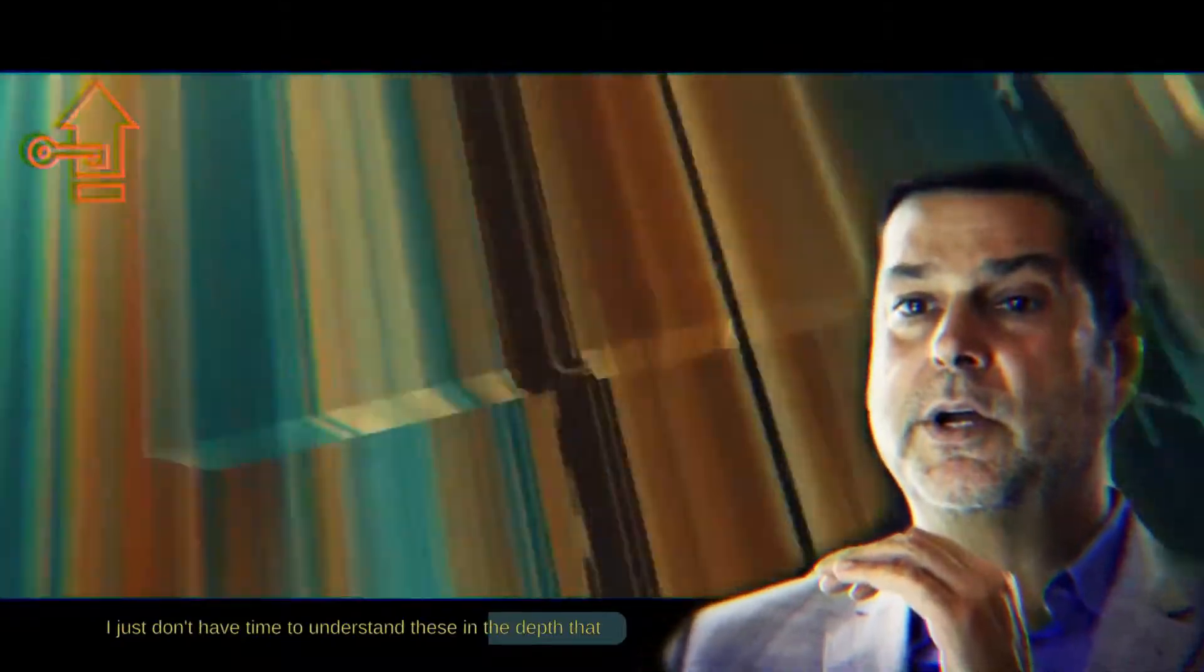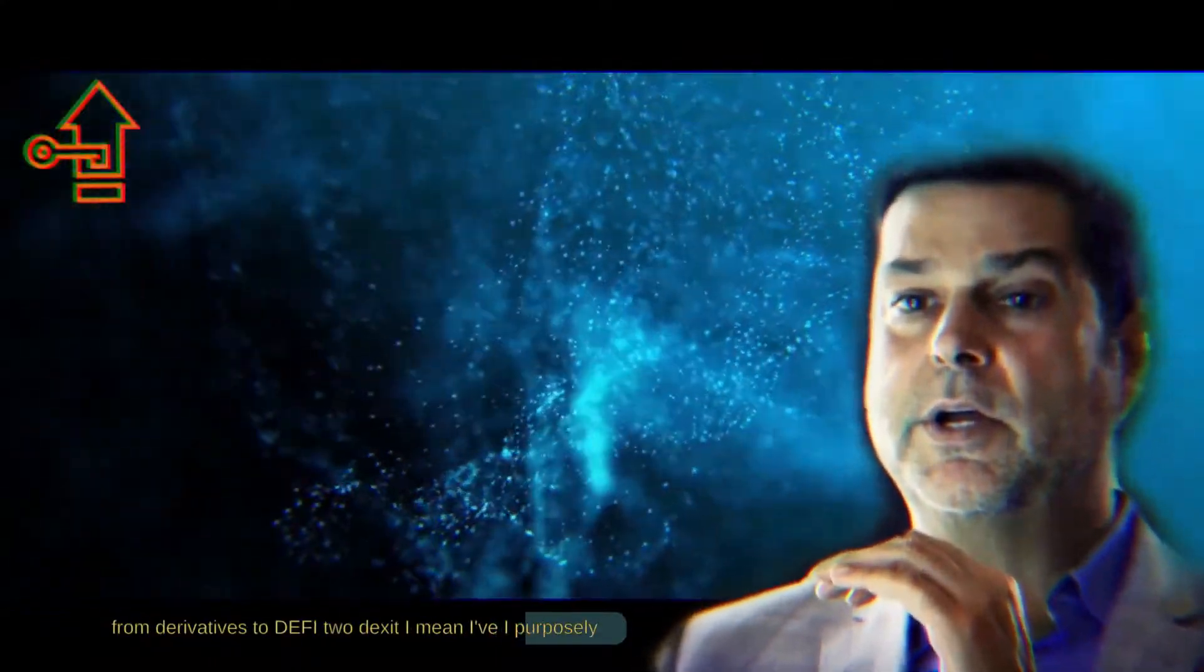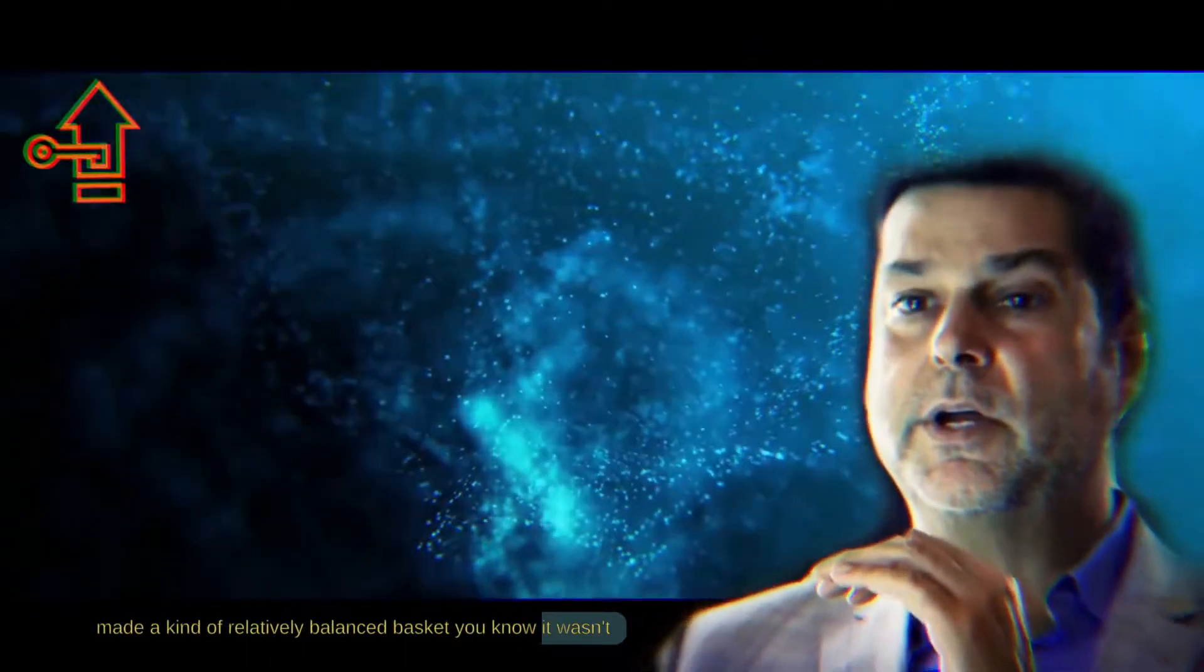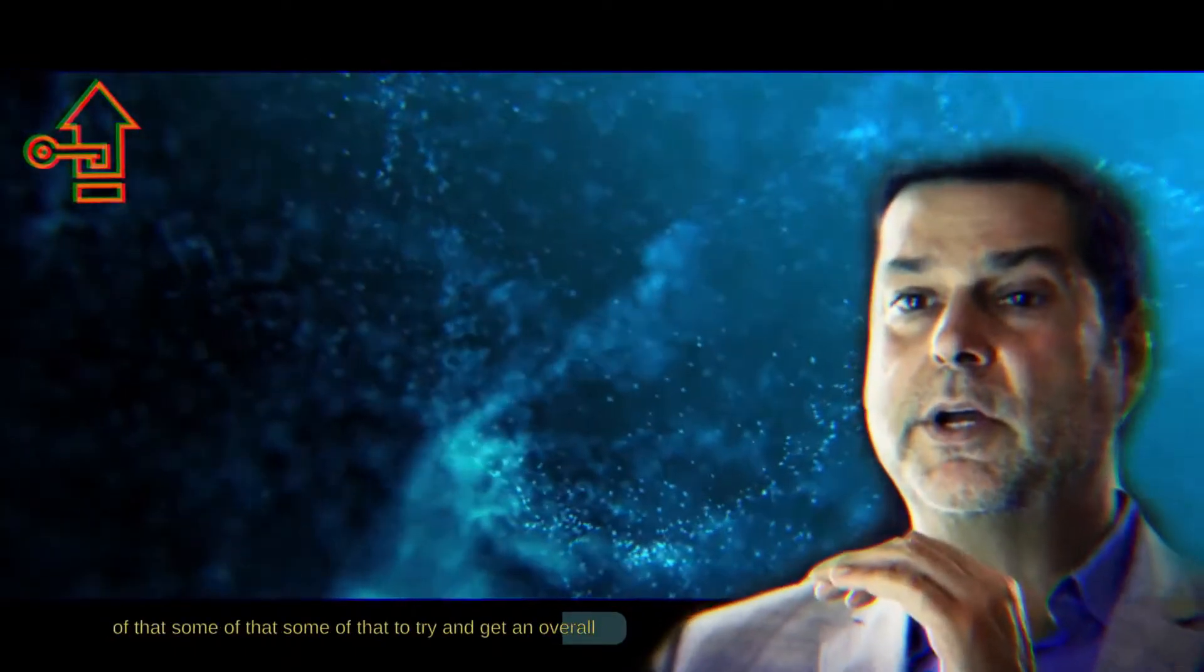And I just don't have time to understand these in the depth that we've all had to learn Bitcoin in, and we're all having to get up to speed with Ethereum in. I've got a mix from derivatives to DeFi to Dexit. I purposely made a kind of relatively balanced basket. It wasn't a totally random process, but it was just a, yeah, okay, some of that, some of that, to try and get an overall balance of the space.